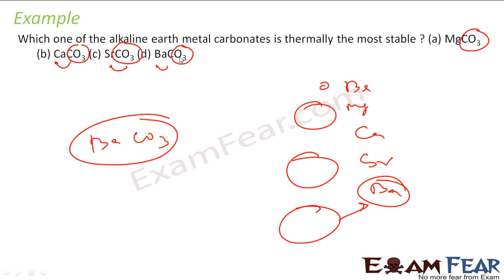Because CO3 is big, if you want the compound to be thermally stable, both Ba and CO3 should be of comparable size. And Ba is the biggest out of all that will have a comparable size with CO3 to enhance stability.